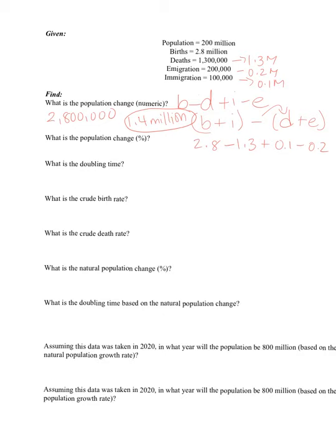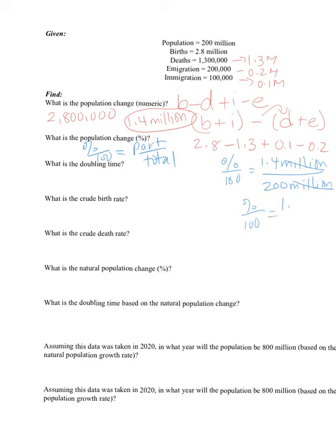Second, what is the population change in percent? My favorite setup: percent over 100 equals part over total. So percent over 100 equals the change — 1.4 million — over the total population of 200 million. The million on top cancels with the million on the bottom, so I can just do 1.4 over 200.